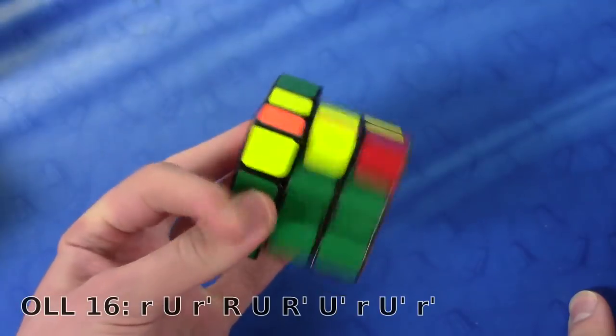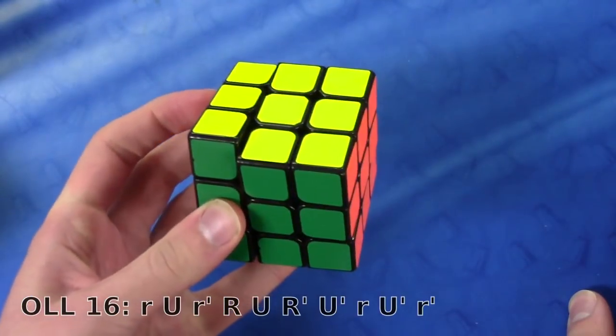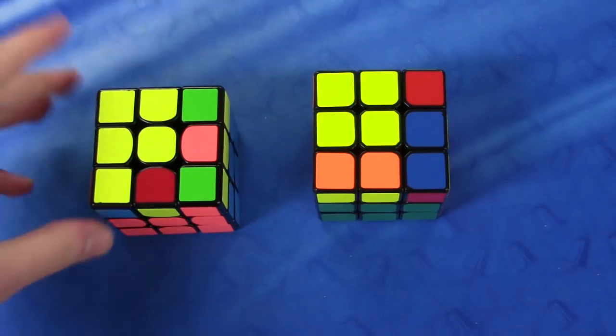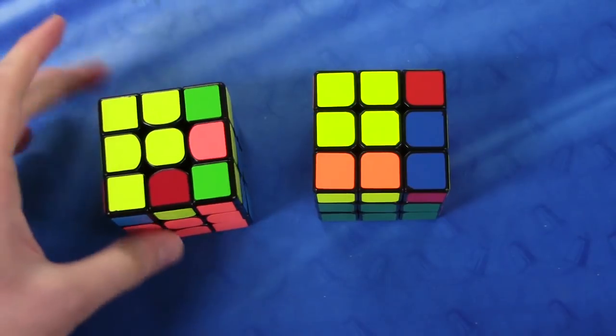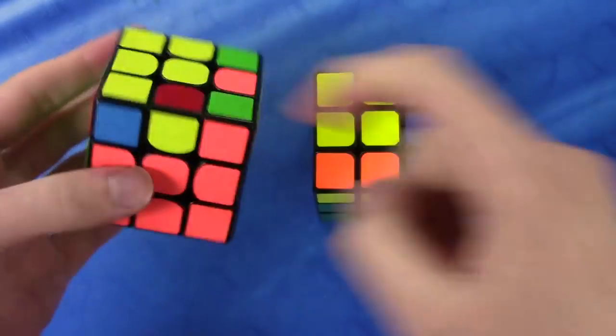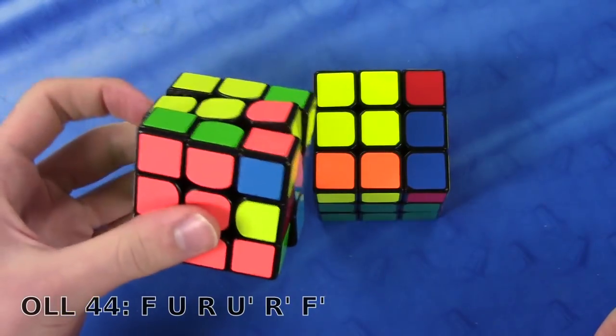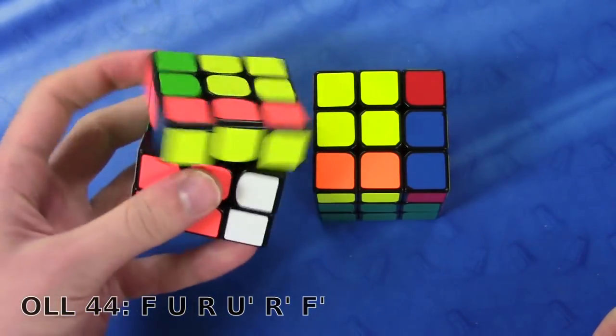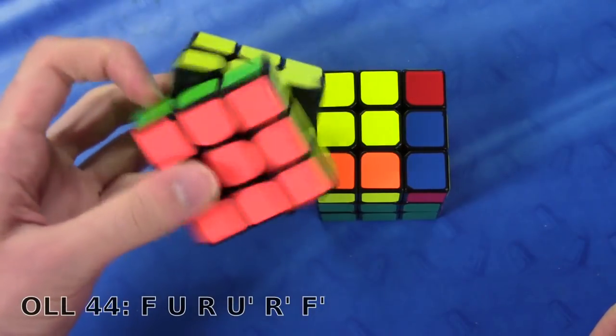The second case is the little L, and the two algs which I propose are also quite similar to the situation I had the first time. So one of them is F and then you just do the reverse of the sexy move like this and then F prime. That was just six moves.